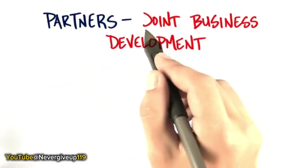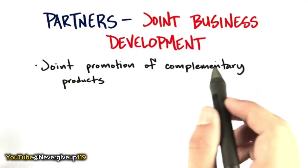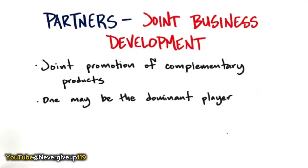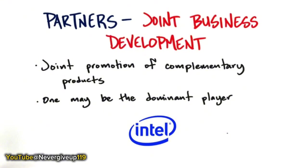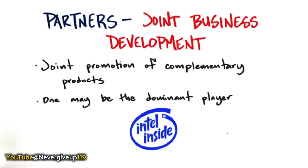The next type of partnership is joint business development — joint promotion of complementary products where one might be the dominant player. The best example in the computer industry was Intel. Historically, chips ended up inside a computer that the consumer never saw, and the only name on the outside of the box was the manufacturer. But Intel in the 1980s changed that game — what if we paid PC manufacturers to put 'Intel Inside' on the outside of the box? What used to be an unknown piece of silicon actually became a valuable brand through joint business development, joint promotion by sharing advertising dollars and sales programs.